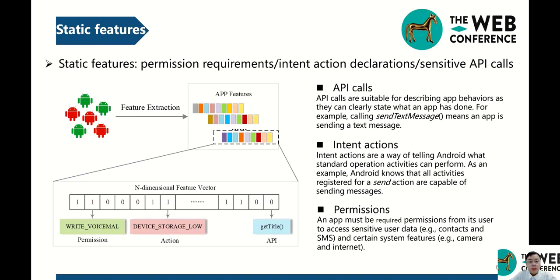The first step is feature extraction. We extract three features from APK file, including API calls, intent actions, and permissions. In detail, API calls are suitable for describing app behaviors as they can clearly state what an app has done. Intent actions are a way of telling Android what standard operations activities can perform. Permission is required when an app accesses sensitive user data and certain system resources.